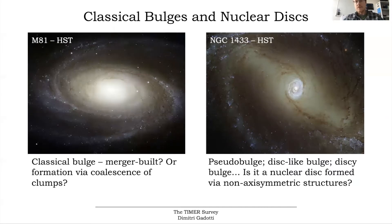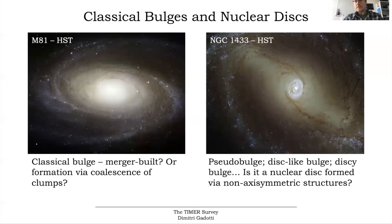One of the things that bars are expected to do is to push gas from the disk to the central region of the galaxy. This is what you see here in these dust lanes — the gas being pushed by the bar towards the center. It's expected that this gas at some point in the center will be compressed and form a new stellar structure. It's one of the things I'm going to show today: whether or not this component built by the bars is what we call a pseudo-bulge, identified photometrically as a component with an exponential light profile.